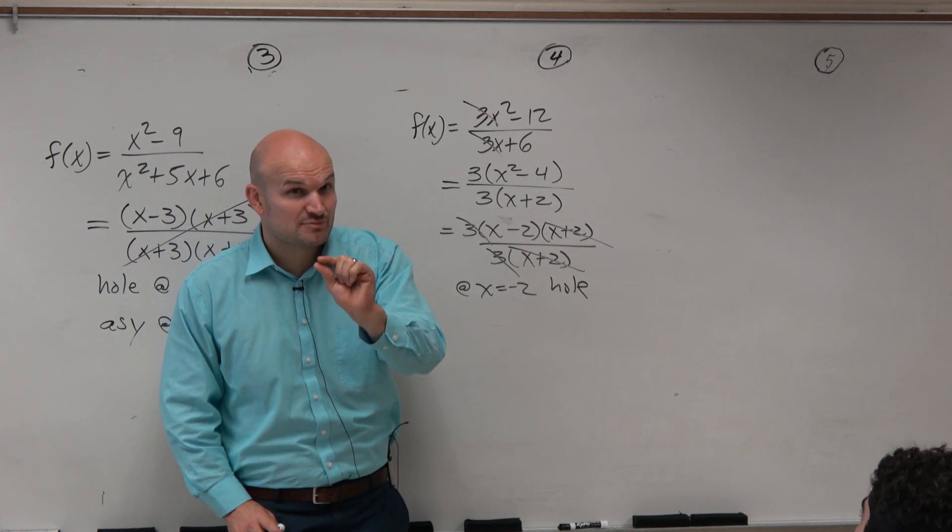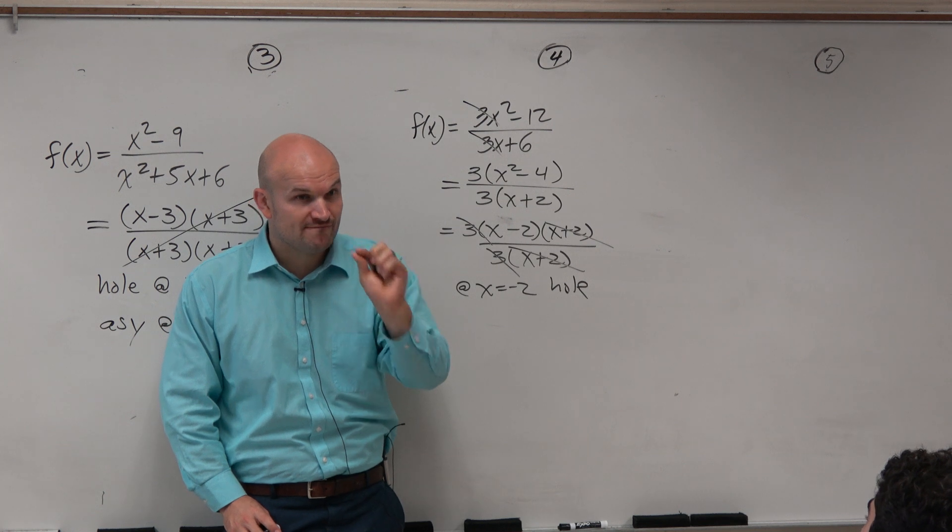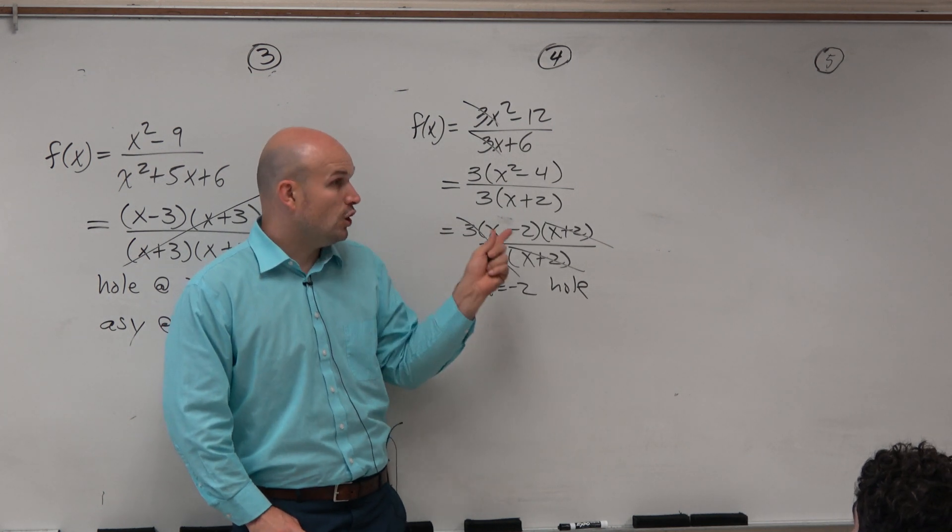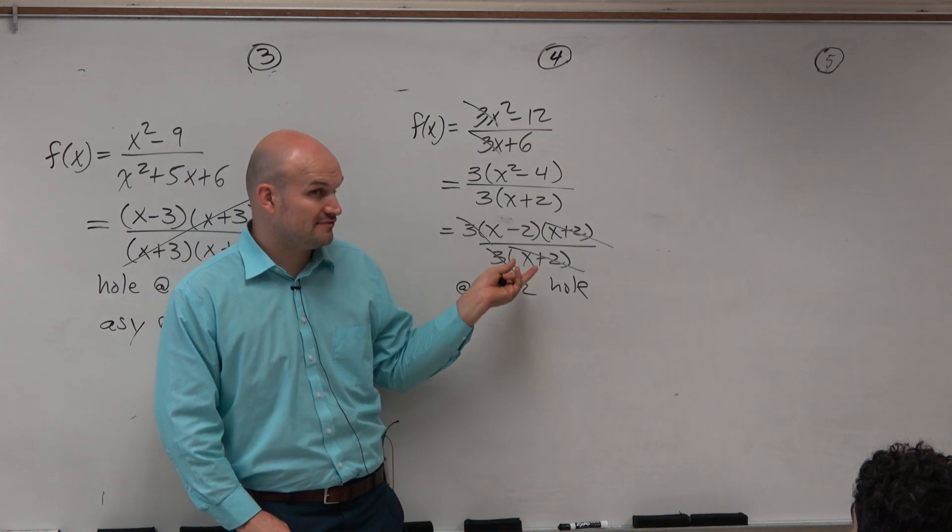Remember, guys, holes and asymptotes only occur where the function is undefined. The function is only undefined at one value here, negative 2.